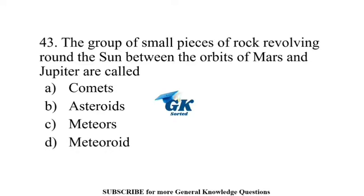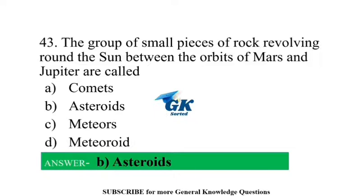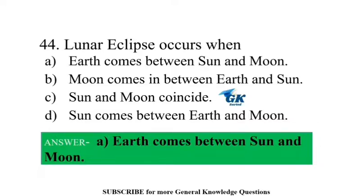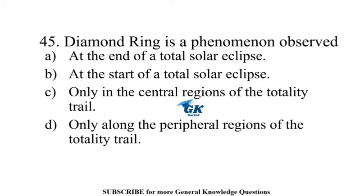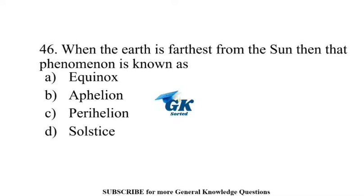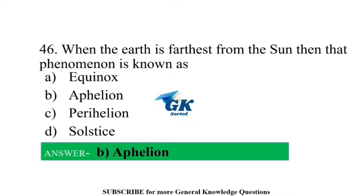The group of small pieces of rock revolving round the sun between the orbits of Mars and Jupiter are called Asteroids. Lunar eclipse occurs when Earth comes between the sun and moon. The Diamond Ring is a phenomenon observed only along the peripheral regions of the totality trail.